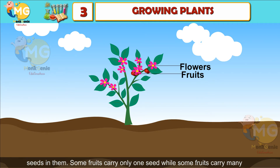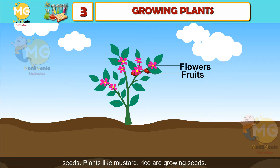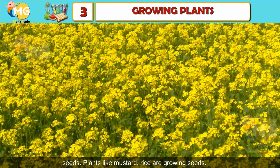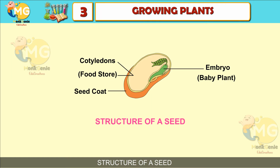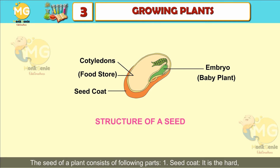Reproduction through seeds: many plants bear flowers on them. The flowers change into fruits which carry seeds in them. Some fruits carry only one seed while some fruits carry many seeds. Plants like mustard and rice grow from seeds.